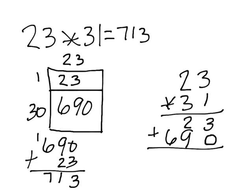When you add these together, 3 plus 0 is 3, 9 plus 2 is 11, 6 plus 1 is 7. You come out with the answer of 713.